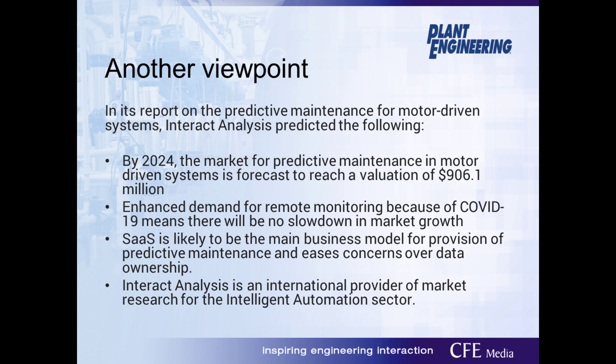An earlier study by the University of Tennessee Reliability and Maintainability Center, conducted in 1991 and again in 2008, had predictive maintenance at about 13% and actually saw a drop in the perceived value of predictive maintenance between those two time periods. A more recent survey by Interact Analysis predicted that by 2024, the market for predictive maintenance in motor-driven systems will equal nearly a billion dollars. Given the enhanced demand for remote monitoring because of COVID-19, there will be no slowdown in market growth.